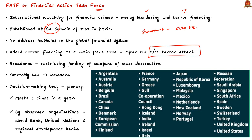FATF includes 39 countries including the US, India, China, Saudi Arabia, Britain, Germany, etc. An important point is that India became a member of FATF in 2010. Note that the FATF plenary is the decision-making body of the FATF and it meets three times per year. Now let us see the two types of lists of FATF.